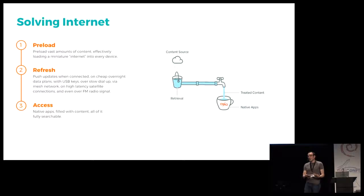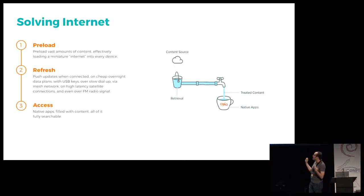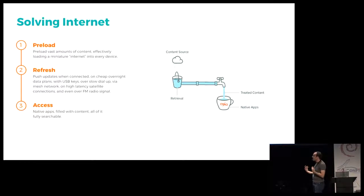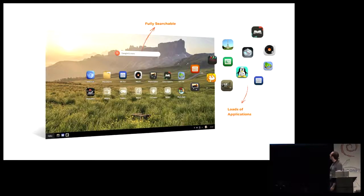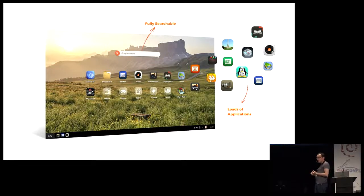We refresh this content whenever internet is available, or really whenever anything that can refresh that content is available. We can refresh content using a USB key or using other computers in your local network if they have content we are interested in. All this content is accessed through native applications that we ship on the device itself. Everything is searchable, very intuitive for people who have not typically used a computer before but are used to a tablet or smartphone.